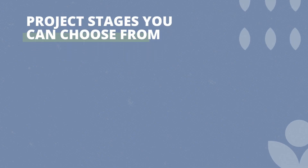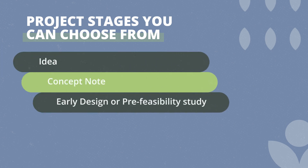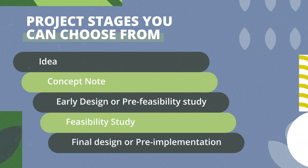It is also important that you are able to indicate at what stage of development or implementation the climate action project is in. The following is an example of a list of project stages you can choose from: idea, concept note, early design or pre-feasibility study, feasibility study, and final design or pre-implementation.